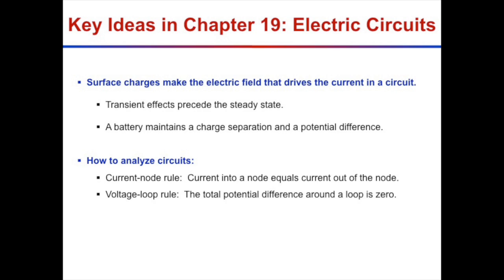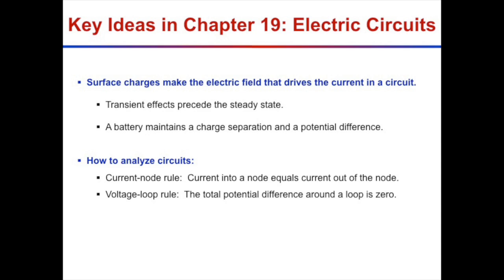Chapter 19 is where we currently are in electric circuits. Some of the key ideas in Chapter 19 that we've been discussing are as follows. We've talked about how to analyze circuits. Last time we went over the current node rule, which is basically what comes in must come out. We've also been talking about surface charges and how surface charges are the actual microscopic thing that makes the electric field that drives the current in a circuit.